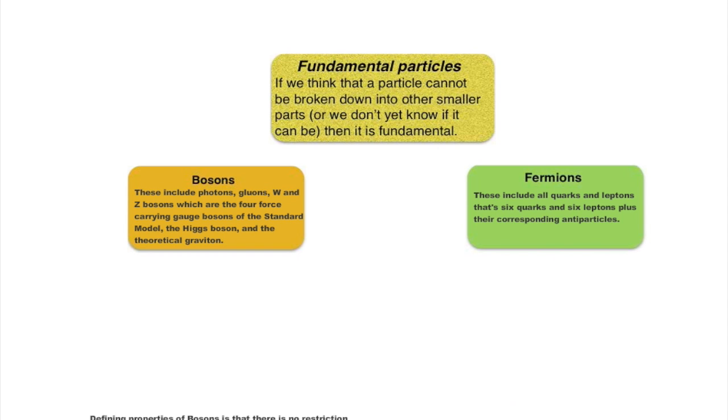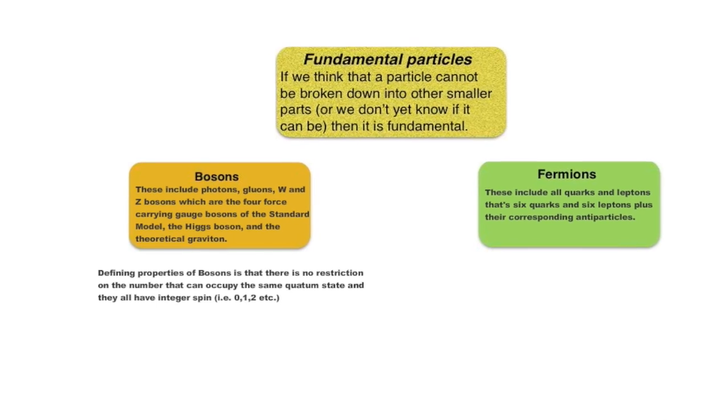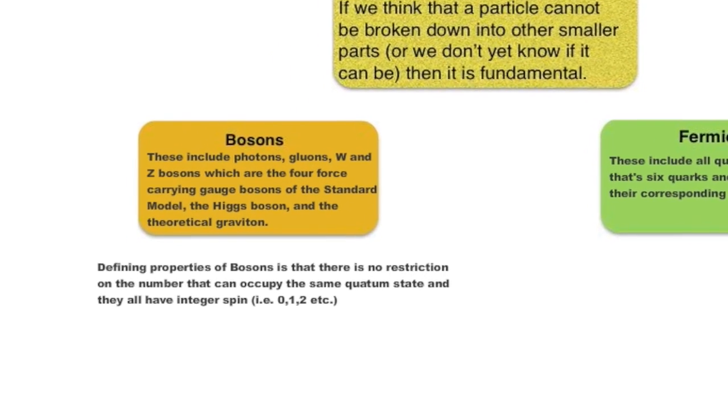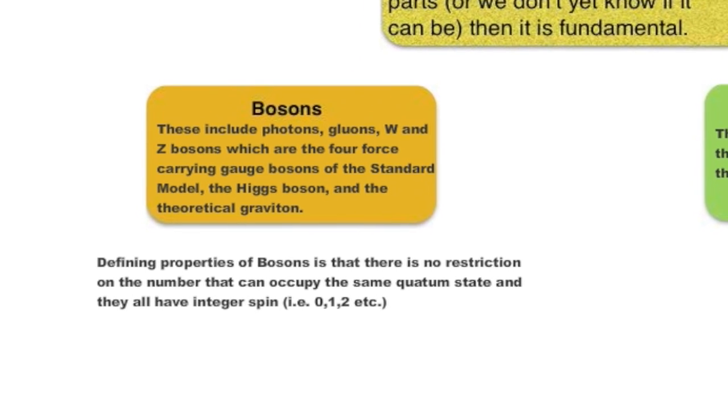Defining property of bosons is that there is no restriction on the number that can occupy the same quantum state at the same time and they all have integer spin, that is 0, 1, 2 and so on.